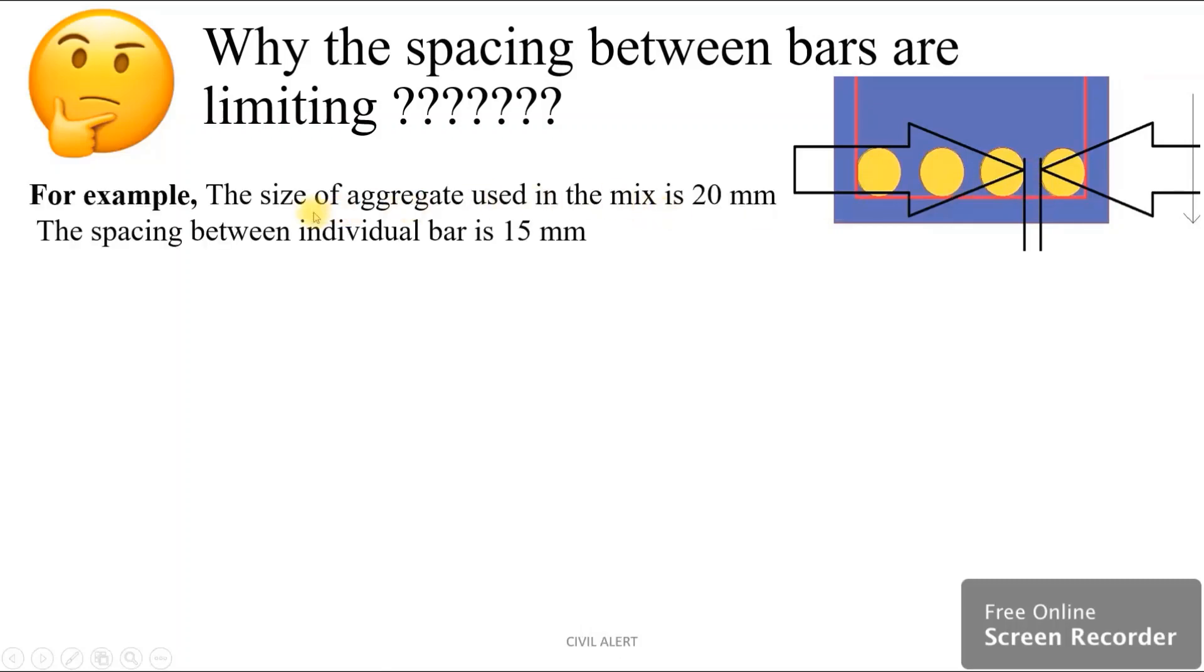For example, the size of aggregate used in the mix is 20 mm and the spacing between individual bars is 50 mm. In this mix, this beam is cast.